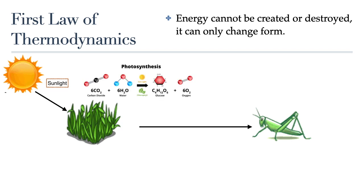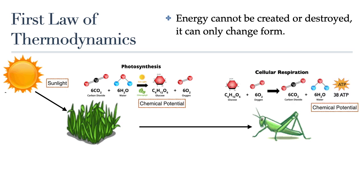During photosynthesis, energy in sunlight is converted by the grass in this food chain into chemical potential energy stored in sugar molecules. When the grasshopper eats the sugar, it will use cellular respiration to convert some of that energy into the energy found in molecules of ATP. But there are other energy conversions happening. Each of these organisms will also change the energy in ATP into other forms needed to keep them alive, like the mechanical energy needed to open and close stomata in plants, or move muscles in animals, or for active transport in all of their cells.